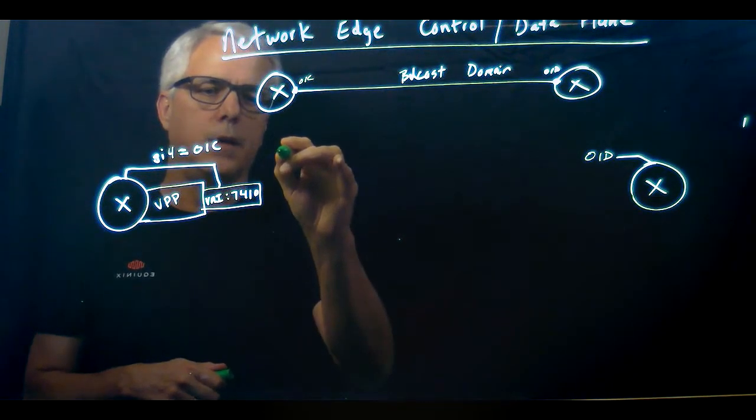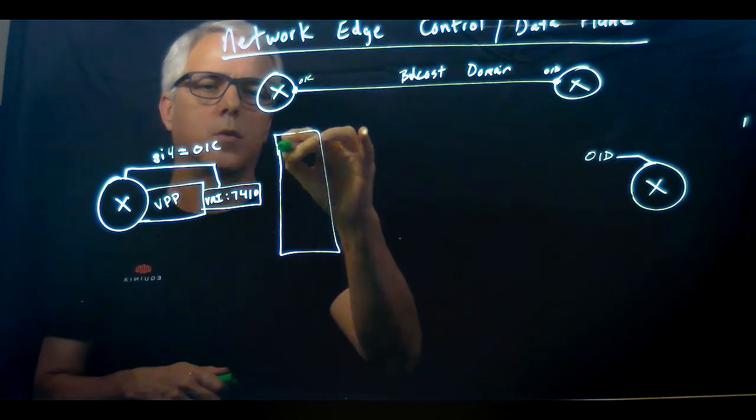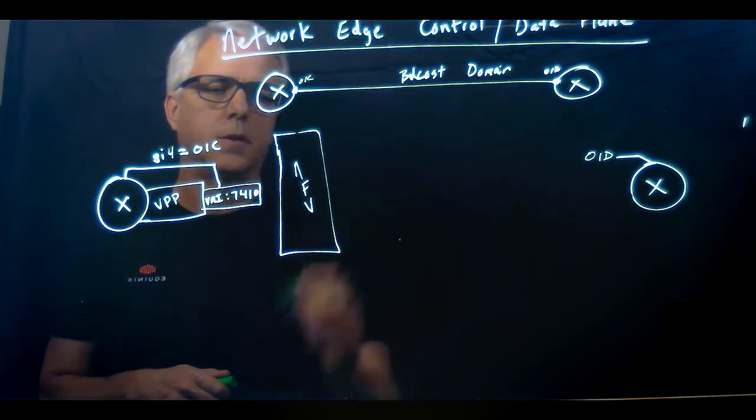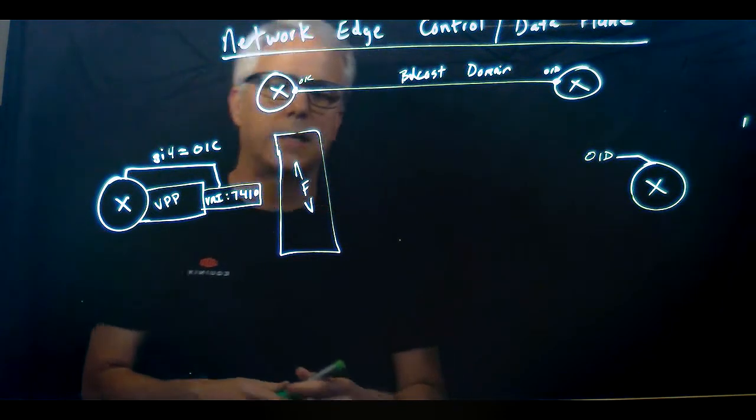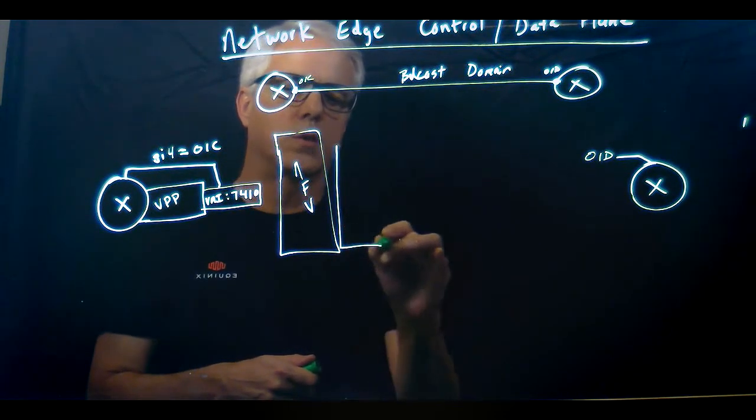In the NFV infrastructure, the network function virtualized infrastructure where the VNFs run, in this NFV infrastructure there is a thing called a VTEP, a VXLAN tunnel endpoint.